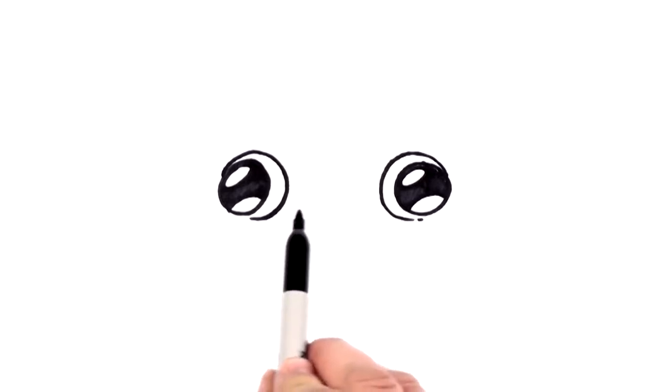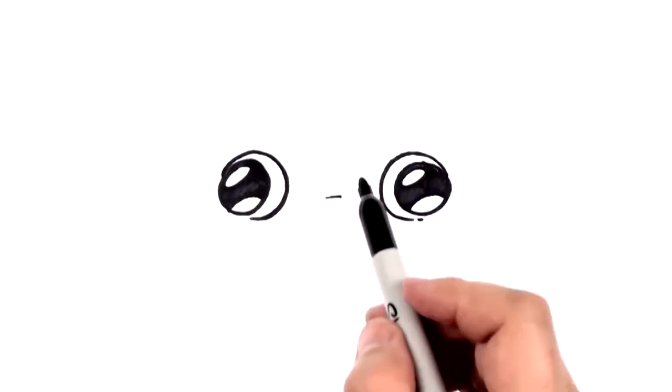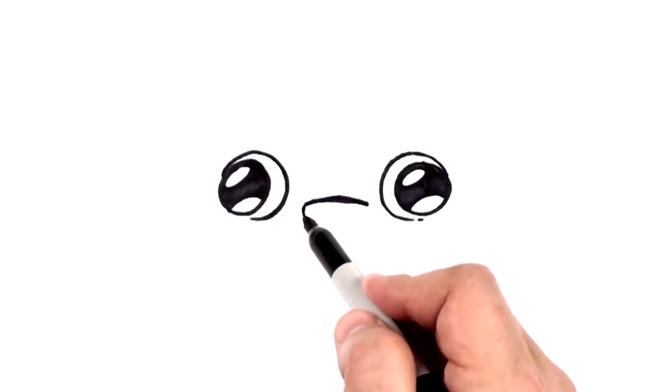Now, the nose is going to fall right here between the eyes, right about here. So not quite to the center, but just below the center of eyes, and we're going to draw a little curve right there. And then we're going to draw a nice little curve below there, like that.